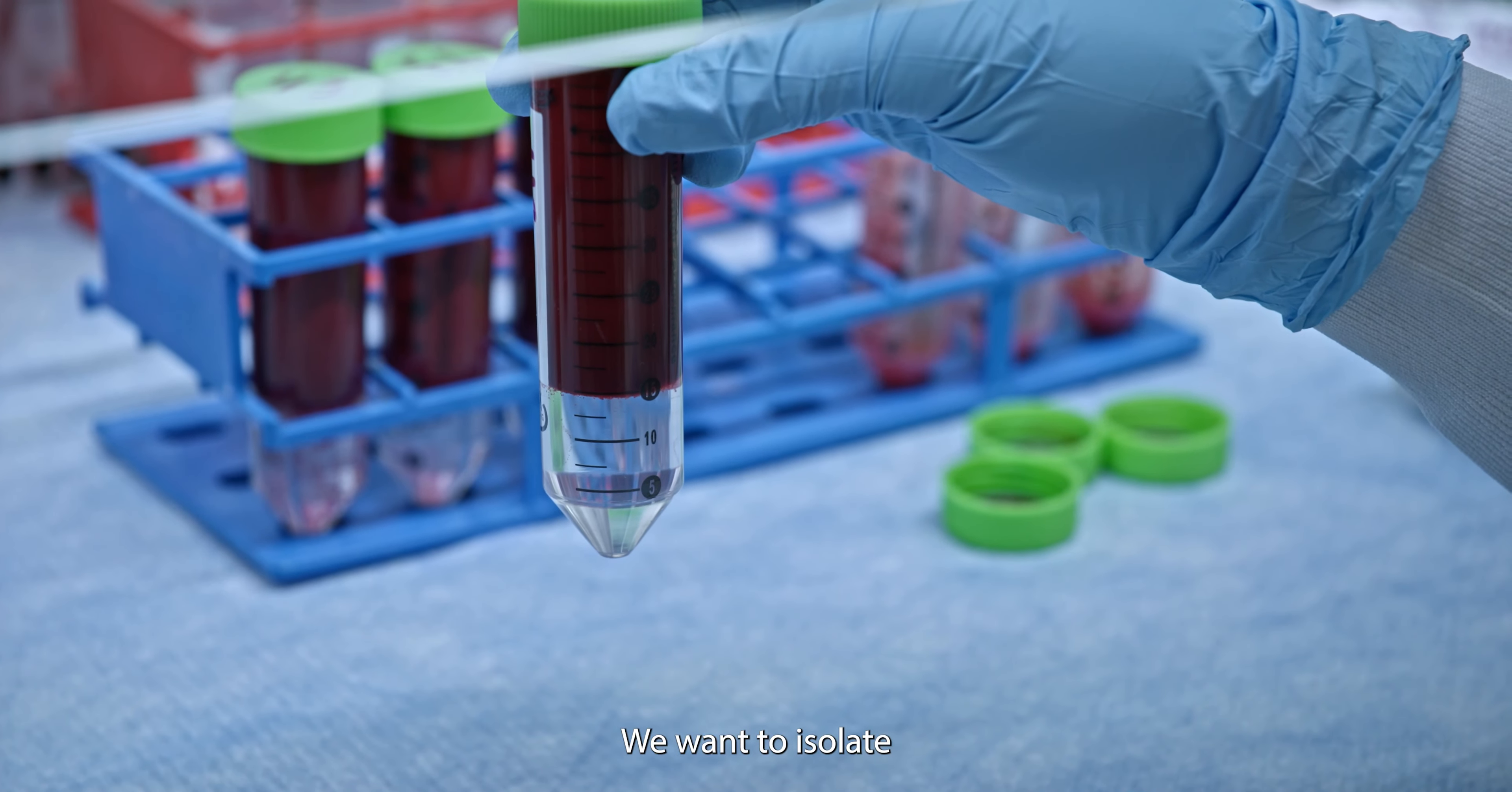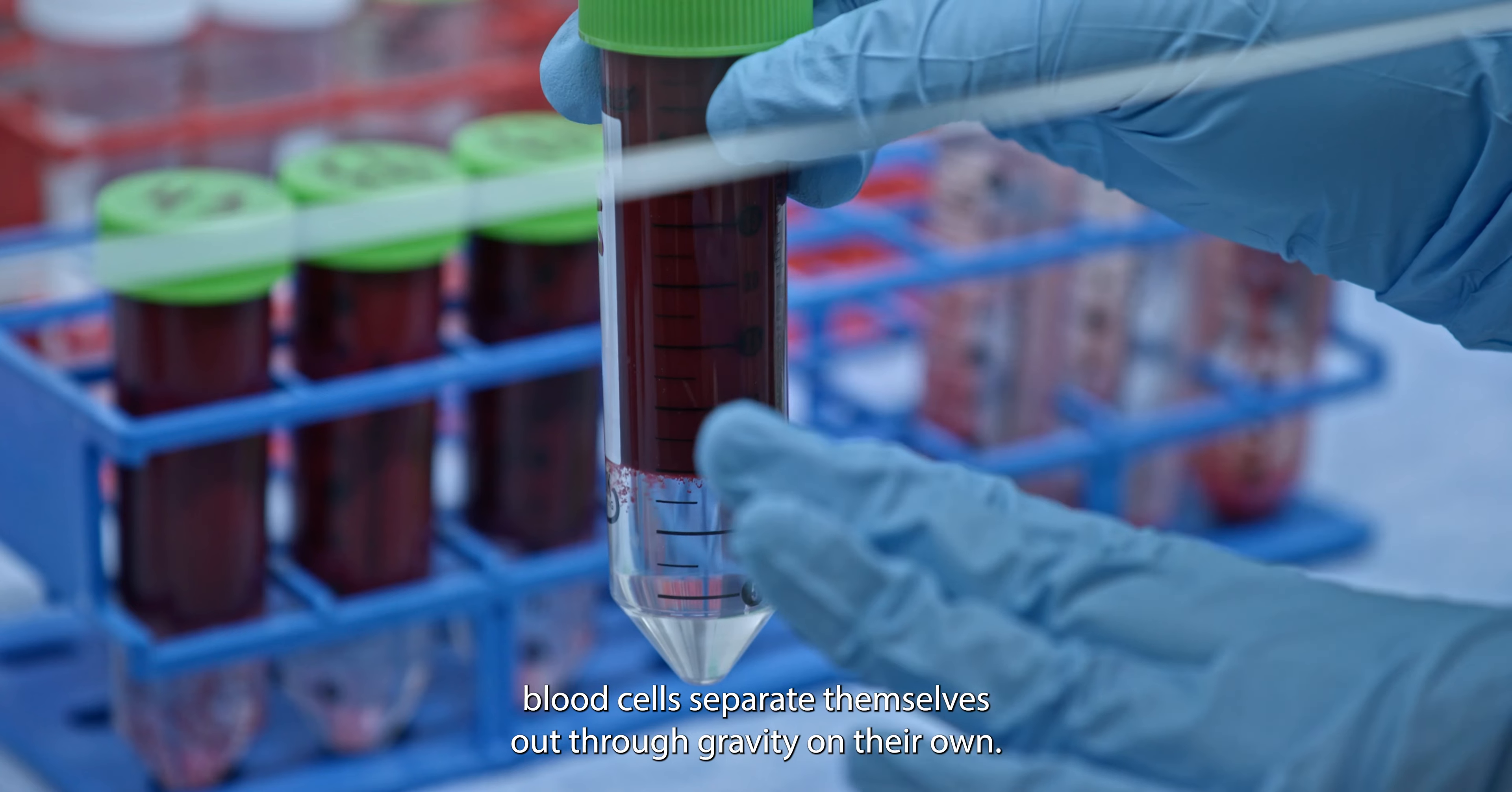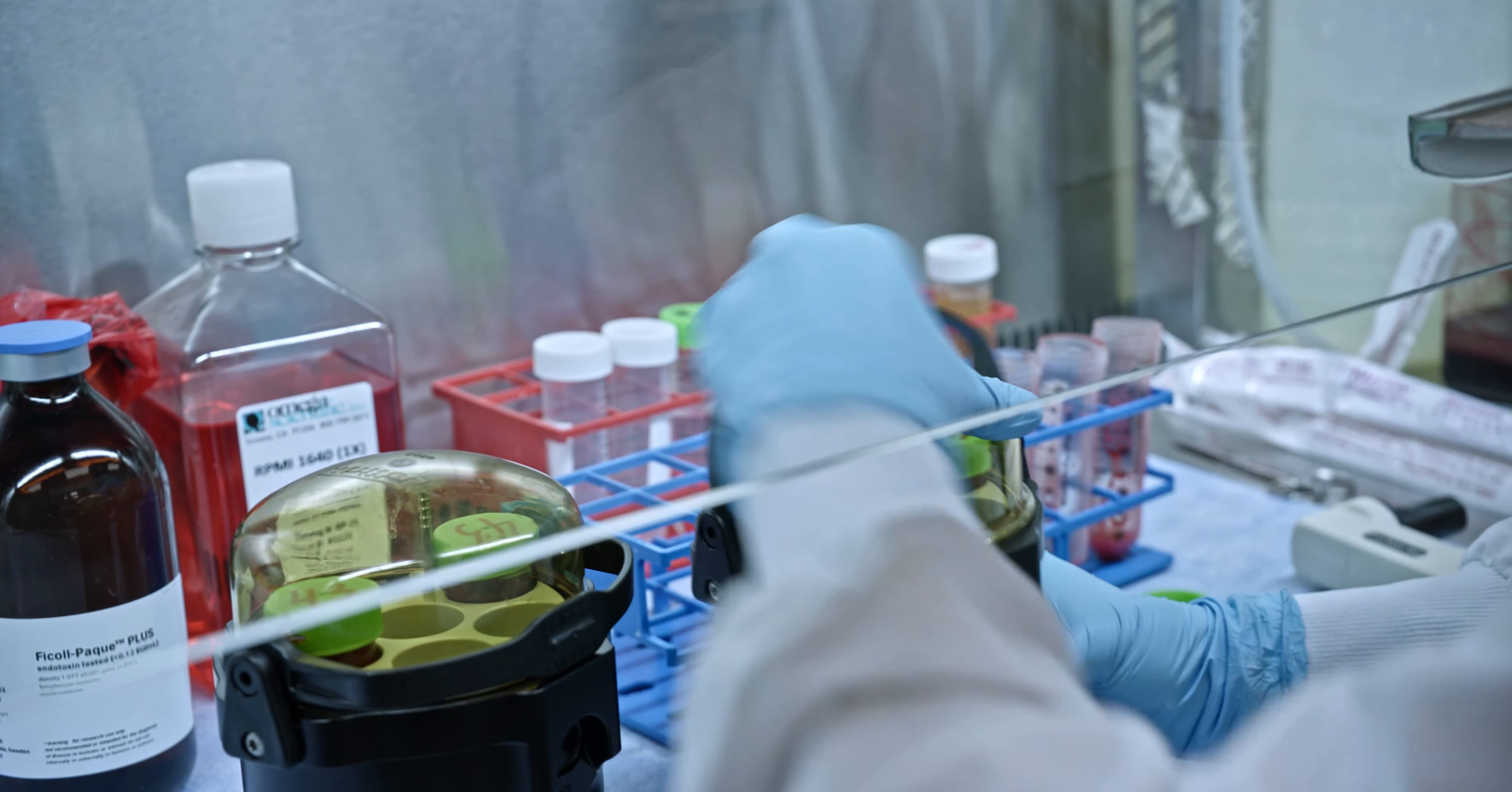We want to isolate the white blood cells from the red blood cells. And with this media, the red blood cells will fall to the bottom and leave the white blood cells above the Ficoll. And the reason we want to gently layer it is so that the red blood cells separate themselves out through gravity on their own. If we broke the Ficoll layer, meaning these two mixed, then the white blood cells will get trapped underneath the Ficoll.